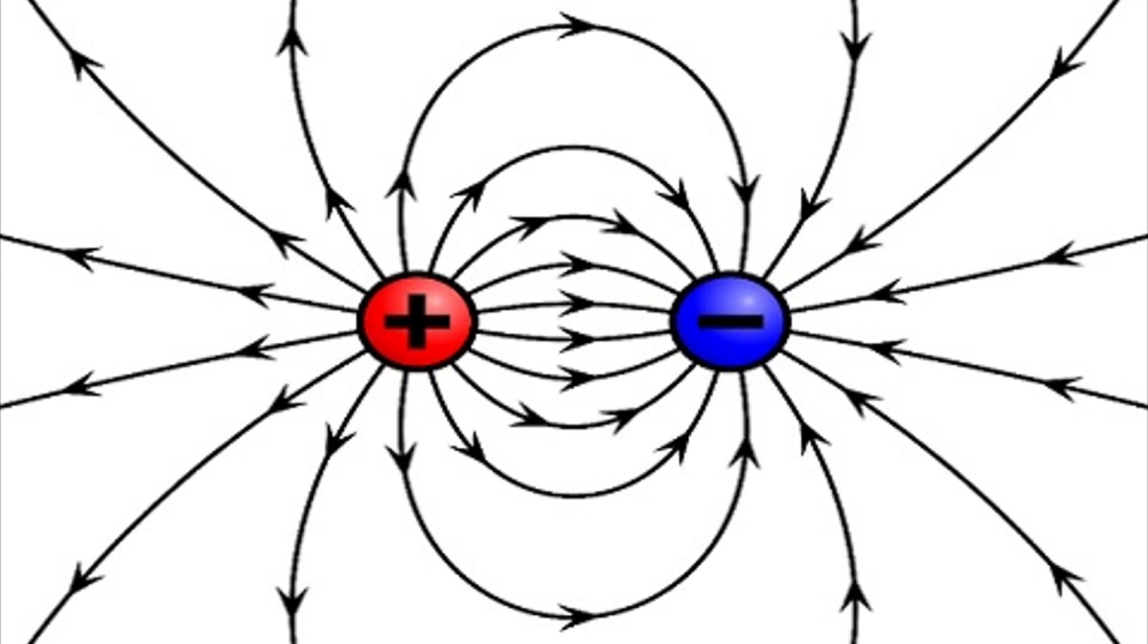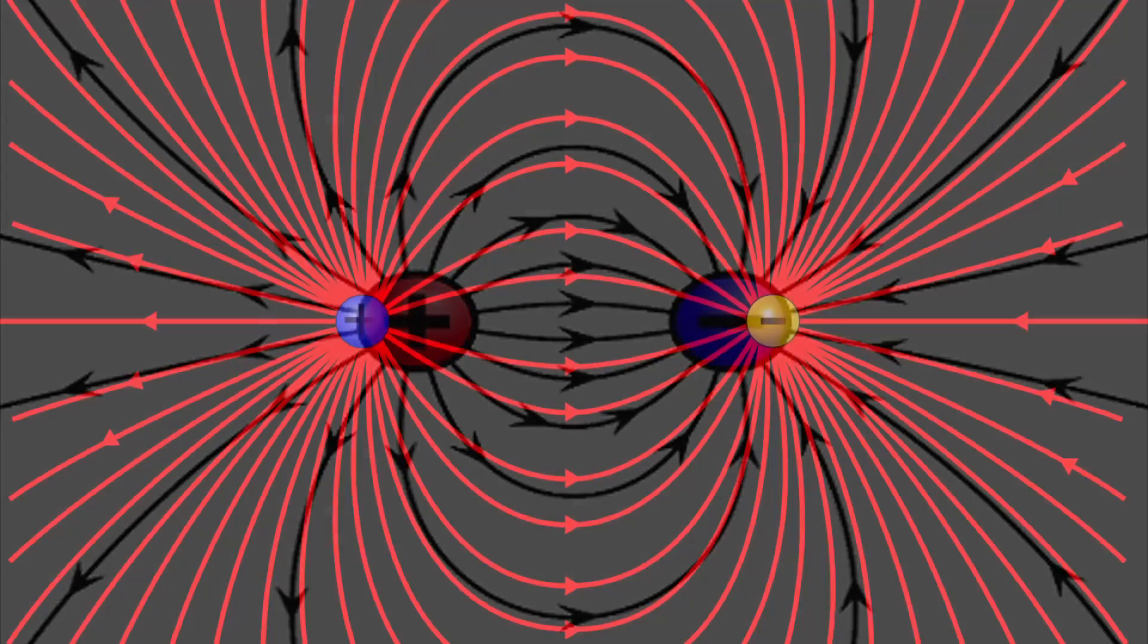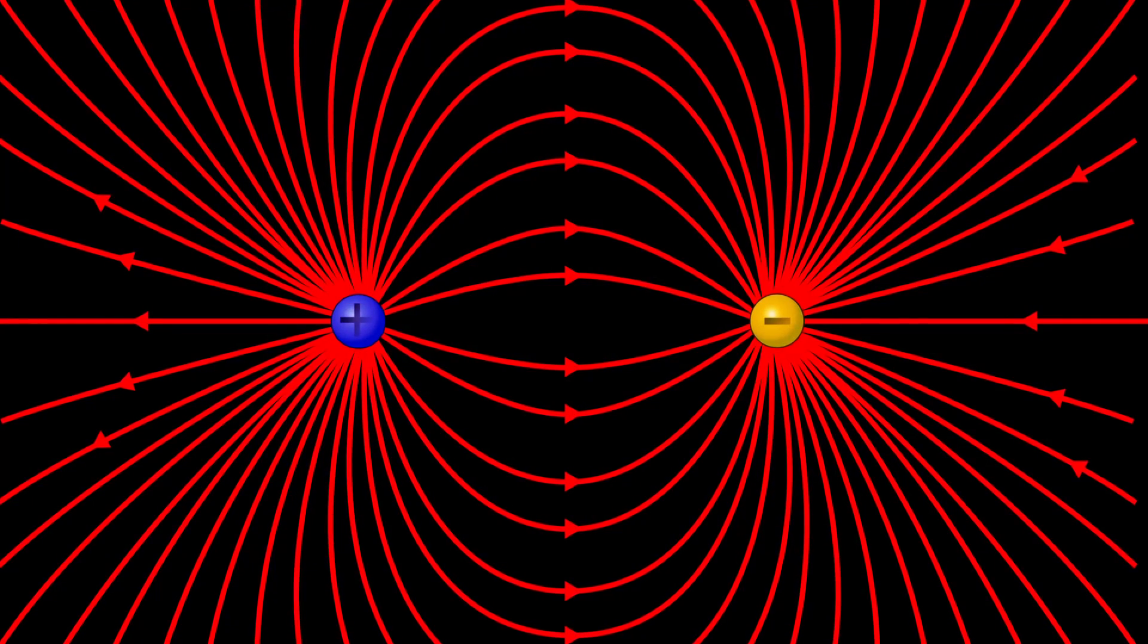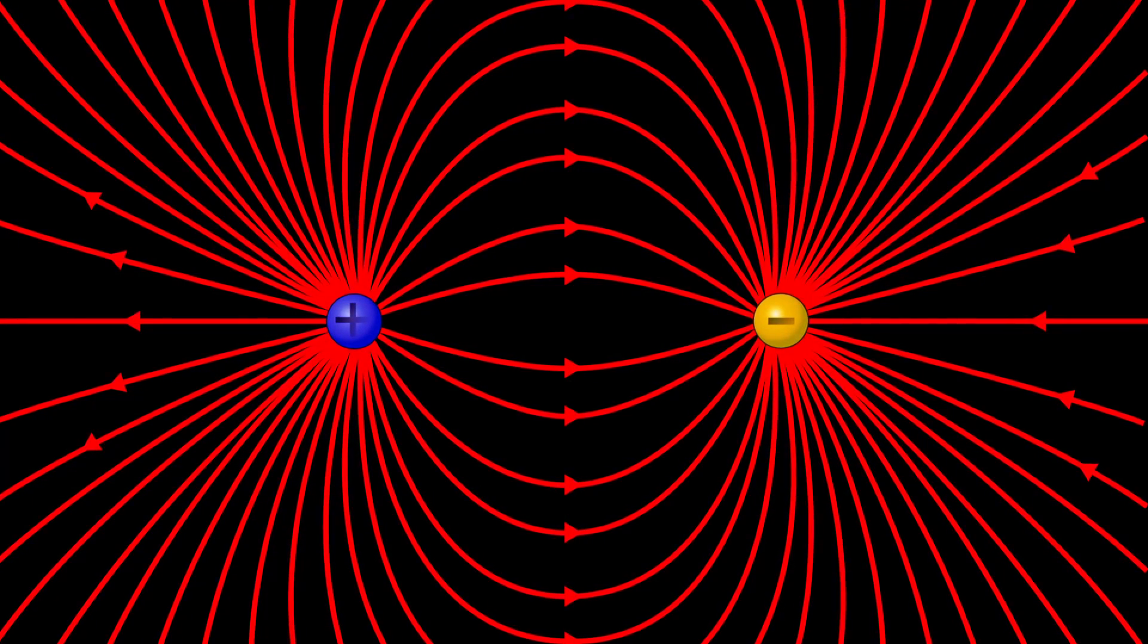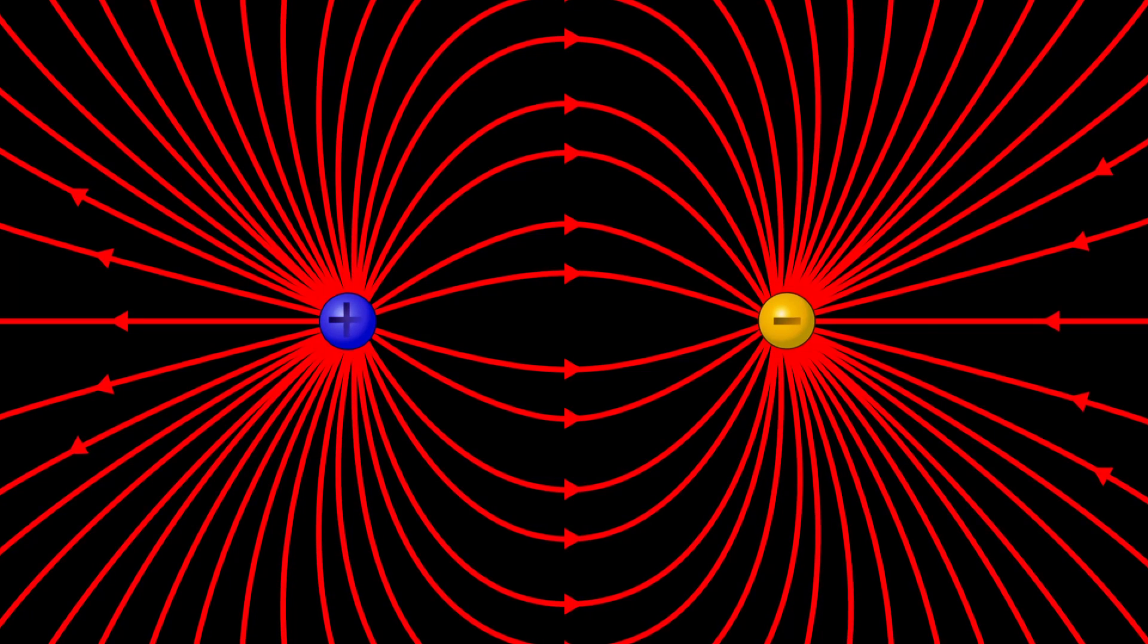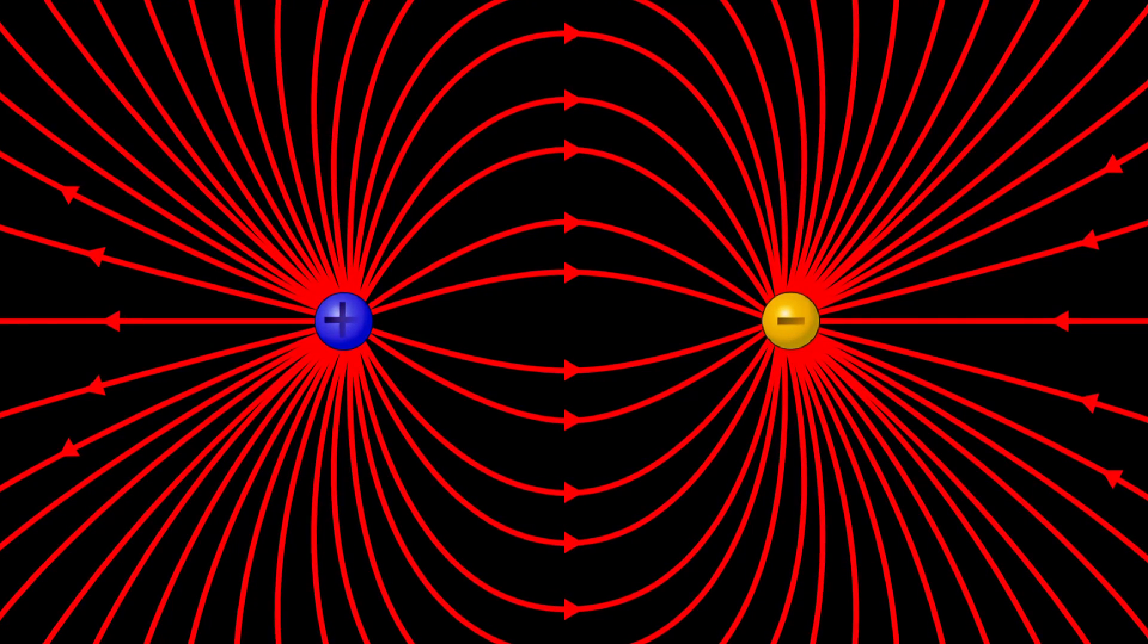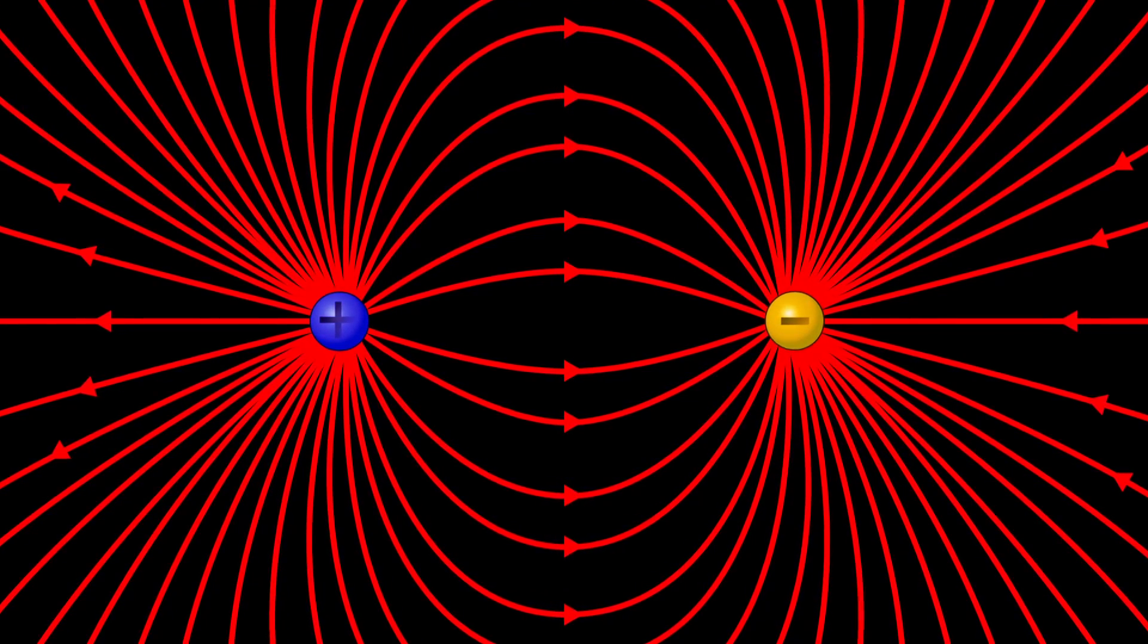An electric field is a force field which surrounds an electrically charged particle. It is represented by electric field lines, which are drawn in the direction of the force that would be experienced by a positive test charge placed in the field. Electric field lines start from positive charges and end at negative charges. The strength of an electric field is measured in Newton per Coulomb.